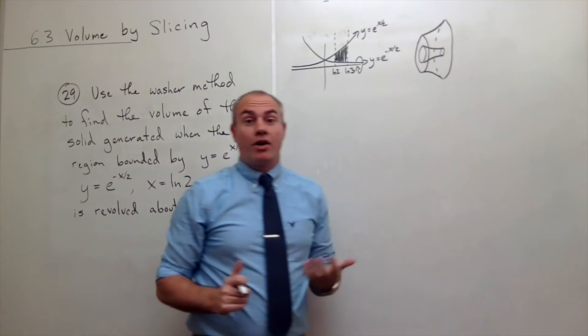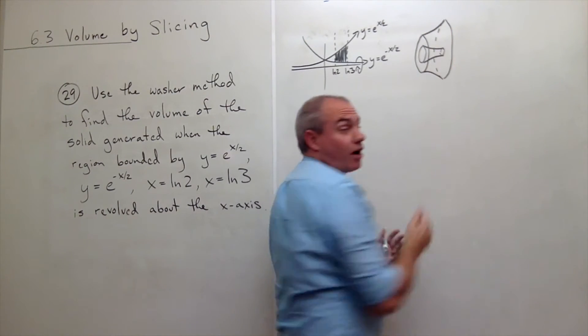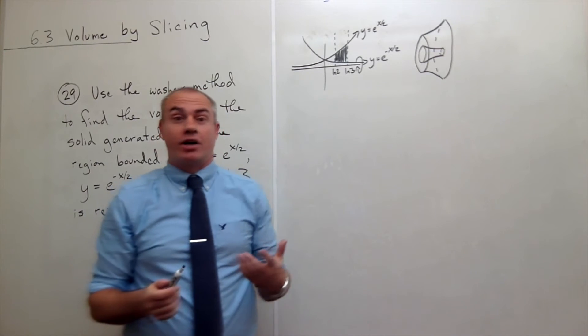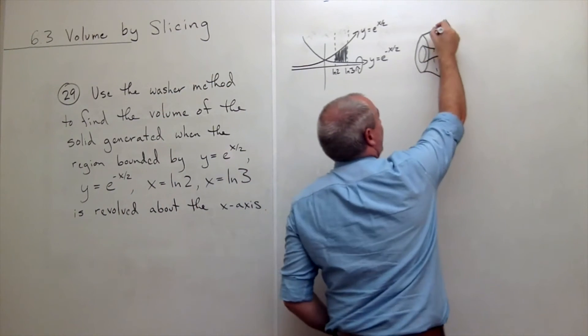And why we call this the washer method is because every cut that I make on this object would give me a cross section that looked like a washer. In other words, a disc with a disc cut out of the middle. So you can see.